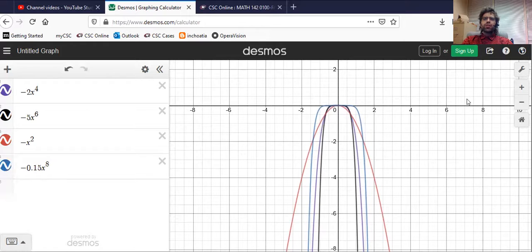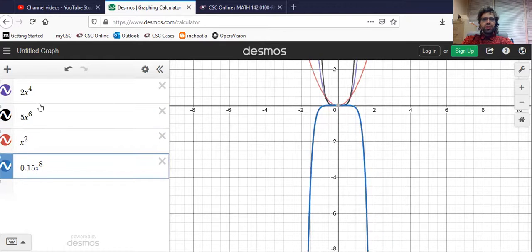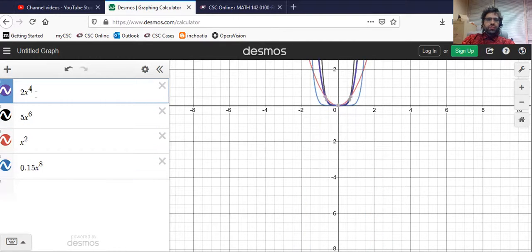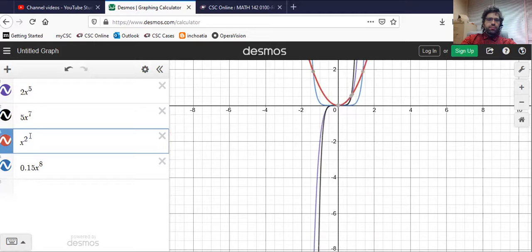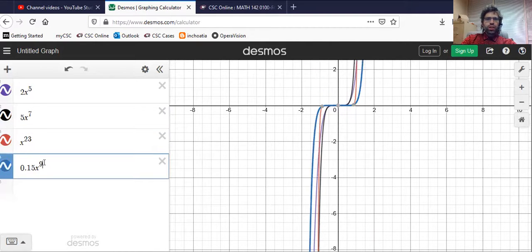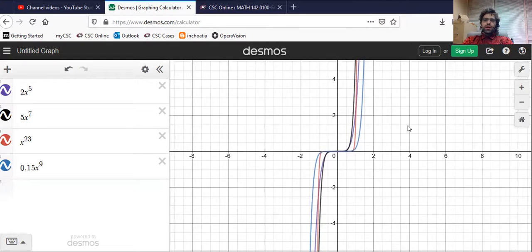Let's make these positive. And let's make the powers odd. Let's bump them all up by one, so that these even powers are all odd. These are the graphs we get.